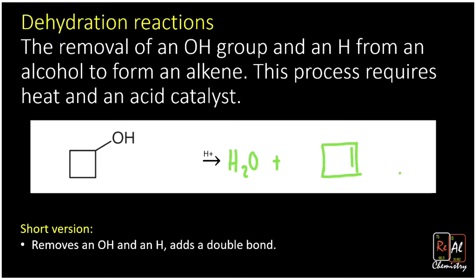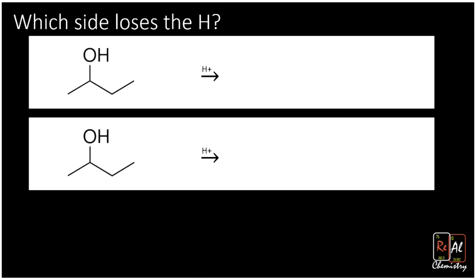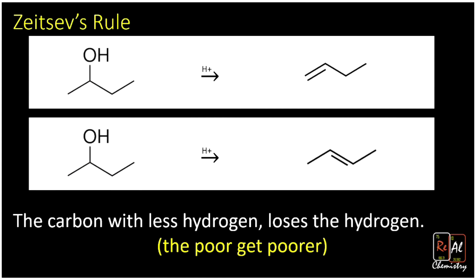In some cases it doesn't matter which hydrogen you remove — you get the same product. But with certain alcohols, depending on which hydrogen you remove, you'll get a different product. For example, removing a hydrogen on the left gives one alkene, while removing a hydrogen from the right gives a different compound with the double bond in the middle of the molecule.